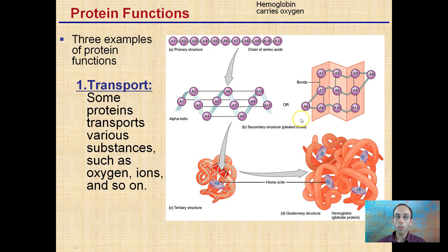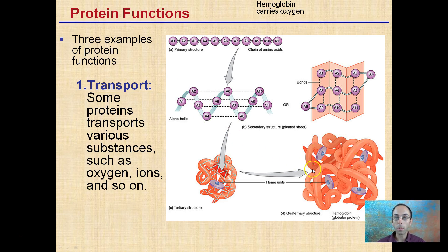Looking at protein functions, one example is transport. Some proteins transport various substances such as oxygen, ions, and so on. The example here is hemoglobin. Hemoglobin takes on a very specific shape — these are the heme units, the iron units — and this is important in your red blood cells for carrying oxygen.